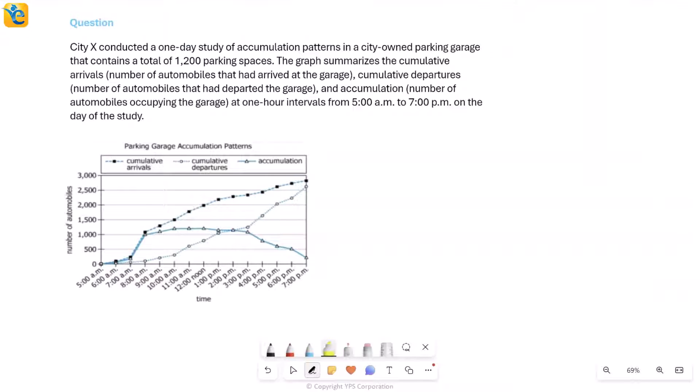Alright, so here we have a certain study that happened in a single day. City X conducted this study to read the accumulation patterns in a certain garage. Now this has a total of 1200 parking spaces, so that's the total number of vehicles it can accommodate. But the graph here below actually summarizes the true numbers.